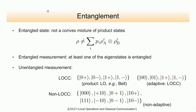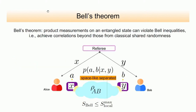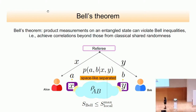The distinction between local operations (LO) and other kinds of measurements will become relevant later. Bell's theorem is a statement that product measurements on some entangled state can violate Bell inequalities — that is, achieve correlations that you cannot achieve with classical shared randomness.